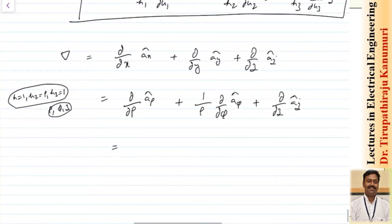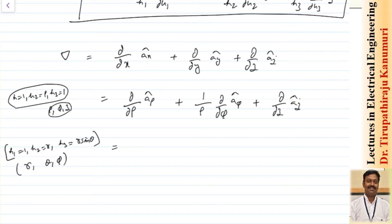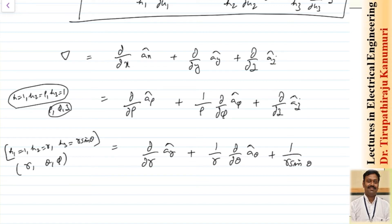Coming to the spherical coordinate system, as seen in our previous class: h1 = 1, h2 = r, and h3 = r·sinθ, and the coordinates are r, θ, and φ. Substituting, this becomes ∂/∂r in the direction of a_r, plus 1/r · ∂/∂θ in the direction of a_θ, plus 1/(r·sinθ) · ∂/∂φ in the direction of a_φ. In this way, I can get the del operator easily.